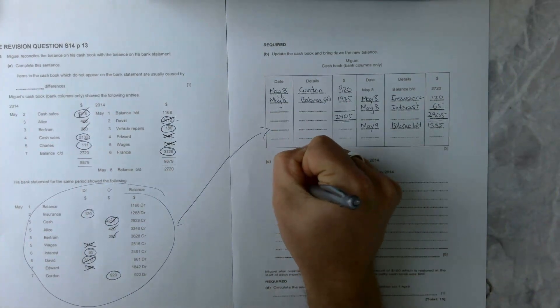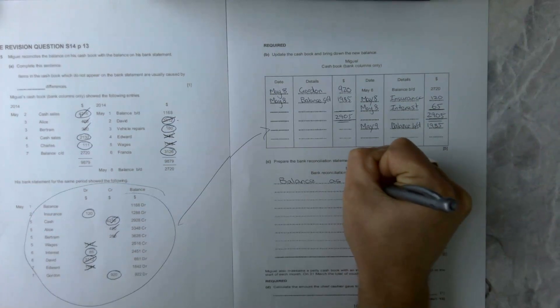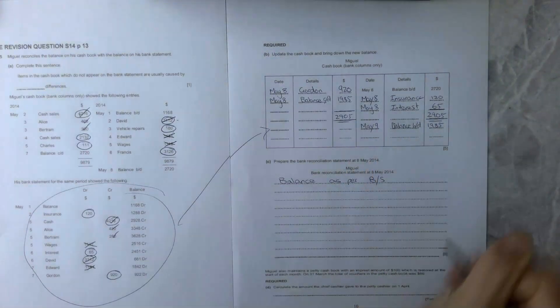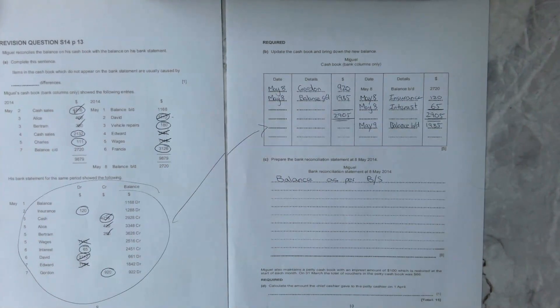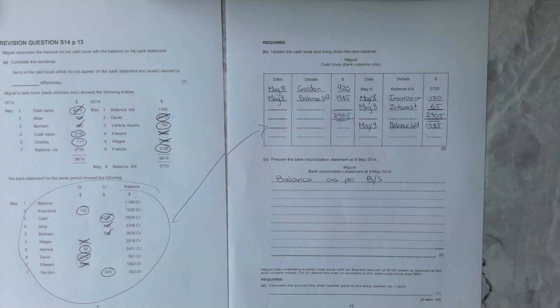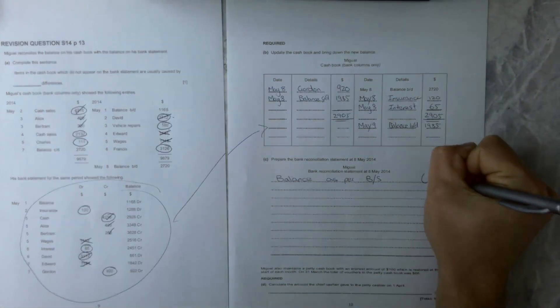What I'm going to do is, because I think it's easier in this case to start with our balance as per our bank statement. So what we're going to do is balance as per bank statement, and as we can see it's got a debit balance.